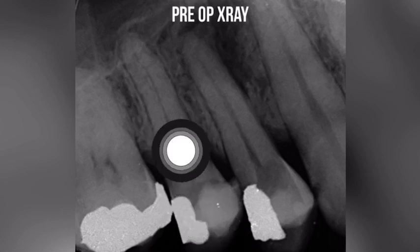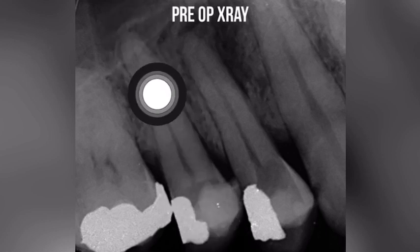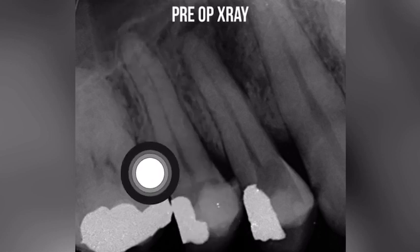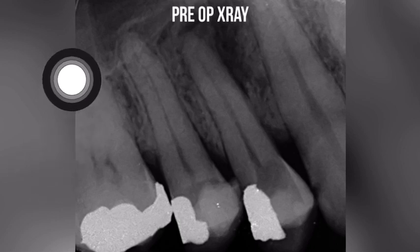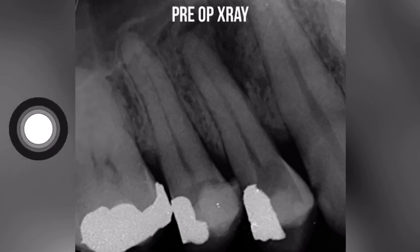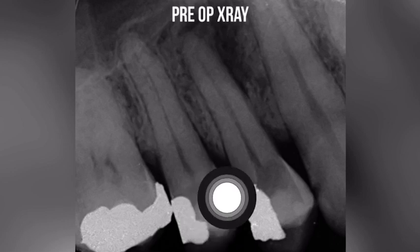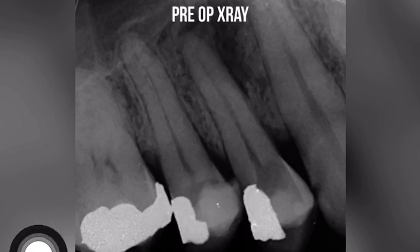Pretty straightforward case: a little bit of curvature, a few curvatures at the apical part, a little bit of periapical radiolucency — nothing too much — a big decay, temporary filling, and a distal amalgam filling.